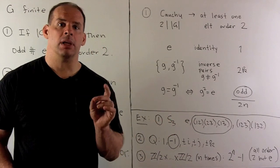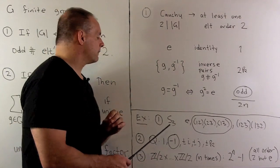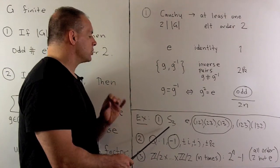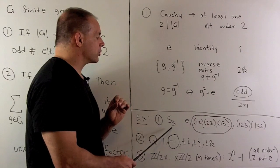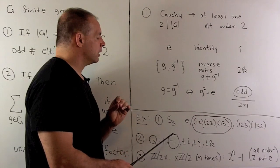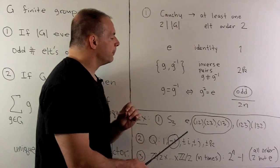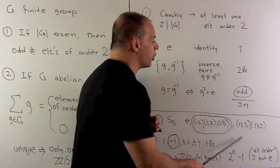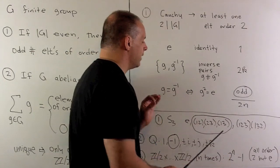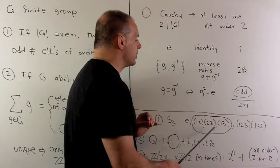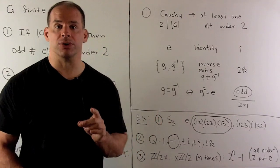Now let's look at some examples. First, let's look at the permutation group on three letters. Here I have the identity element, the elements of order 3 occur in an inverse pair, and then we have three elements of order 2. So our result holds.